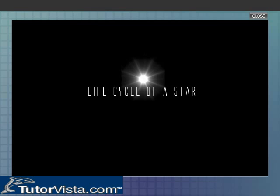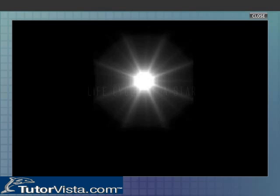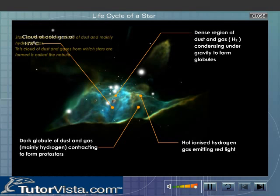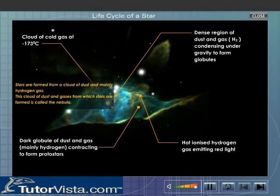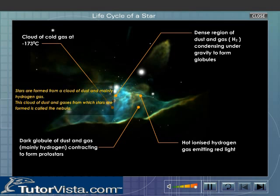Life Cycle of a Star. Birth of a Star: Stars are formed from a cloud of dust and mainly hydrogen gas. This cloud of dust and gases from which stars are formed is called the nebula.